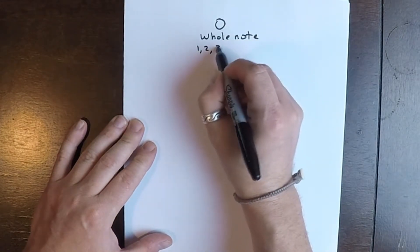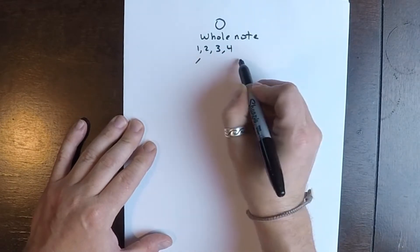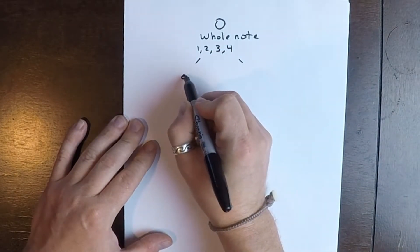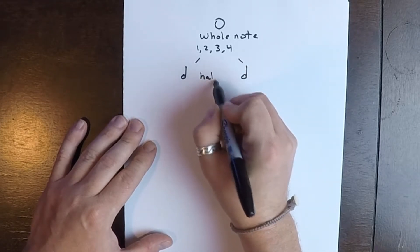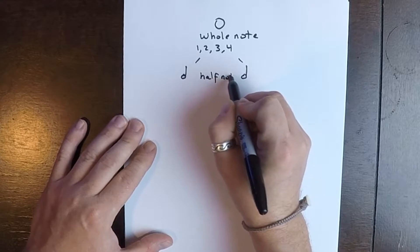It gets counted one, two, three, four. That whole note breaks down into two half notes.